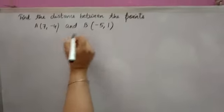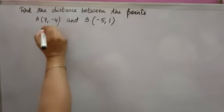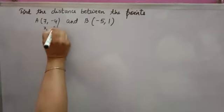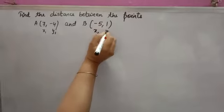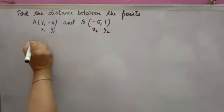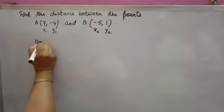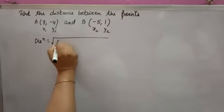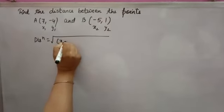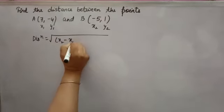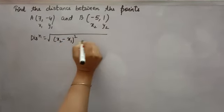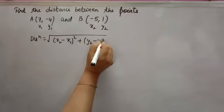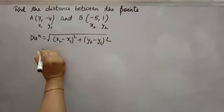The points are A(7, -4) and B(-5, 1). Here, x1 is 7, y1 is -4, x2 is -5, and y2 is 1. The distance formula is: distance equals the square root of (x2 minus x1) whole square plus (y2 minus y1) whole square.